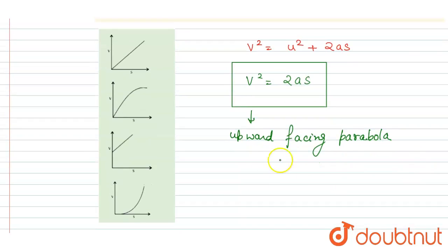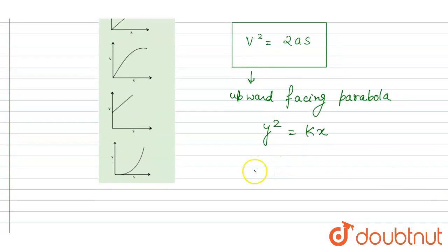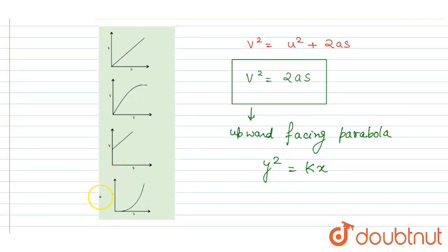So the curve will be like, if you see, y² = kx curve. We know that it is like an upward facing parabola. Now if you see the options present here, upward facing parabola is this, so here D is the correct option.